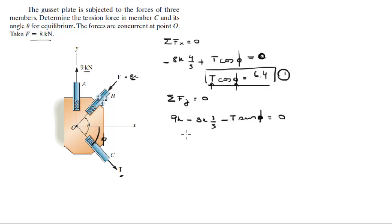So this is equal to 4.2 minus T sine phi is equal to 0. So 4.2 is equal to T sine phi. That's my second formula.